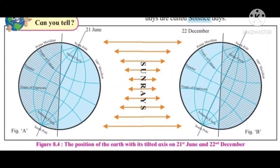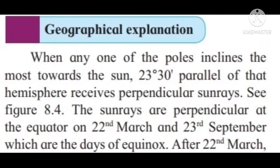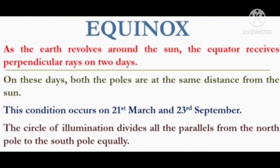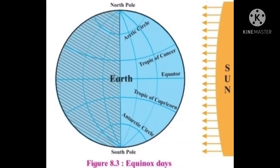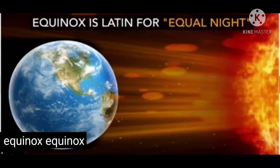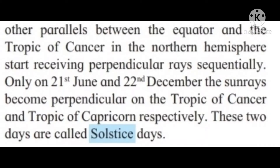Graphical explanation: When any one of the poles inclines most toward the sun, the 23 degrees 30 minutes parallel of that hemisphere receives perpendicular rays. See Figure 8.4. The sun's rays are perpendicular at the equator on 22nd March and 23rd September, which are the days of equinox. As the earth revolves around the sun, the equator receives perpendicular rays on these 2 days. On these days, both the poles are at the same distance from the sun.